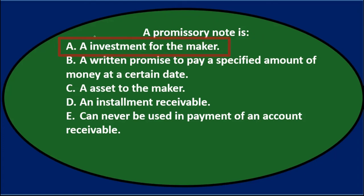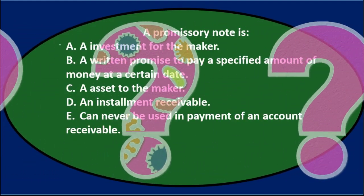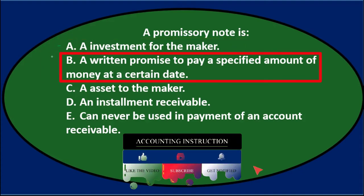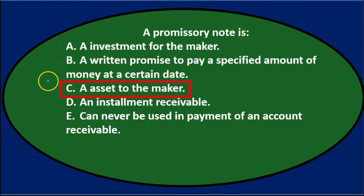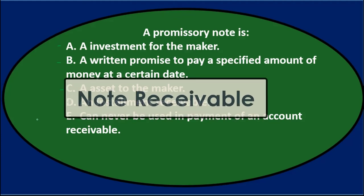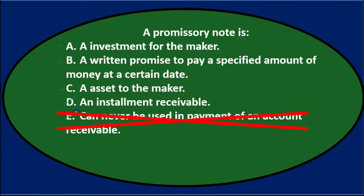Option A says an investment to the maker — you could think of a note as a kind of investment. Option B says a written promise to pay a specific amount of money at a certain date — that sounds like a solid definition. Option C says an asset to the maker — we need to think about who the maker is. Option D says an installment receivable — not necessarily, unless specified. Option E says it can never be used in payment of accounts receivable — actually it's possible to sign a note receivable as payment for an accounts receivable, since the note would charge interest. So we're left with A, B, and C.